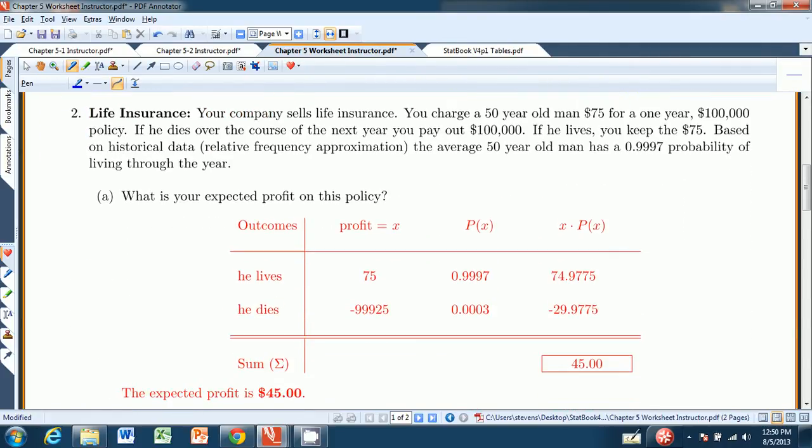Here's a similar example for expected value. It's a life insurance policy, which is also a type of gambling. Only this time, you are the seller. You are selling life insurance. And you charge a 50-year-old man $75 for a one-year $100,000 policy. What that means is if he dies in the course of one year from buying it, you have to pay out his estate $100,000. Now you get to keep the 75, but that's a small consolation.